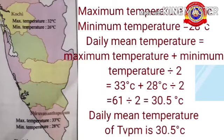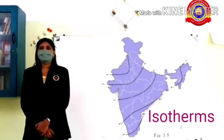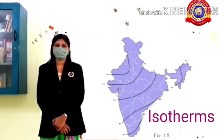We can see the maximum and minimum temperature of Kochi and Trivandrum. For example, we will calculate the daily mean temperature of Trivandrum. The maximum temperature given is 33°C and the minimum temperature given is 28°C. Daily mean temperature equals 33°C plus 28°C divided by 2, which gives 30.5°C. Looking at the map, you can see smooth curved lines connecting places having equal temperature — these imaginary lines are called isotherms.